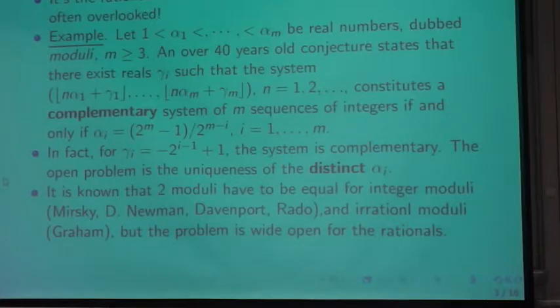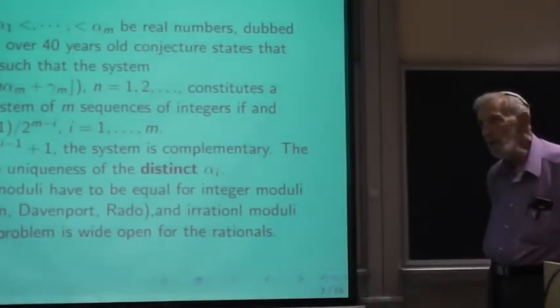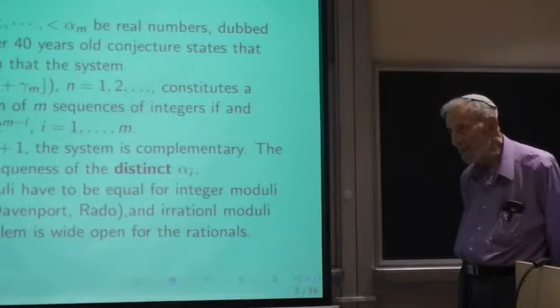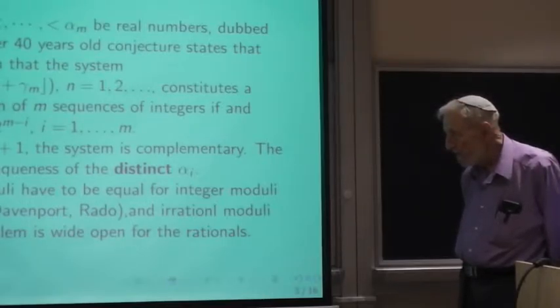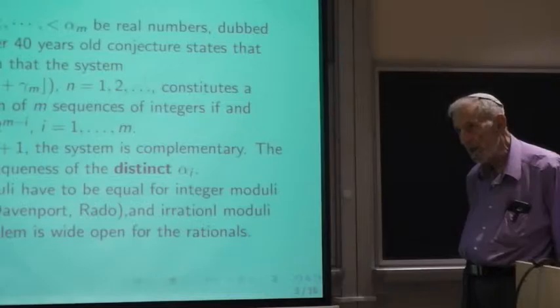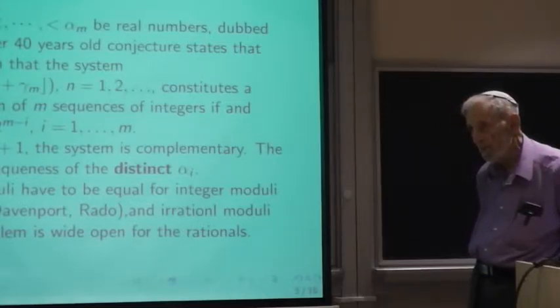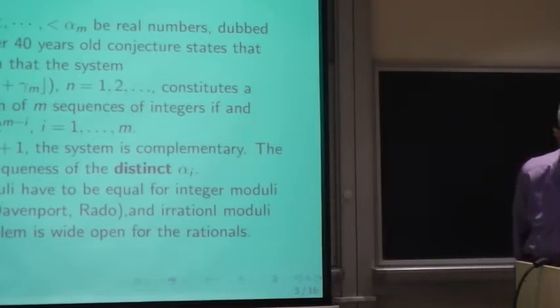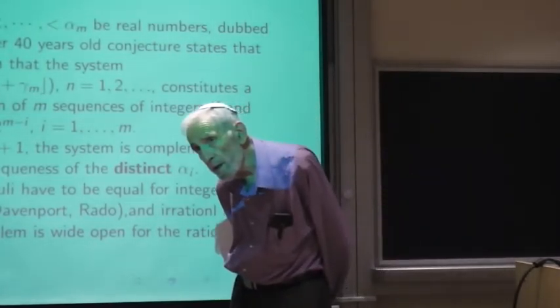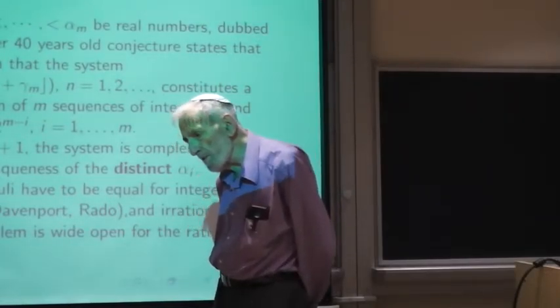But the proof from the book uses, everybody knows what the proof from the book is, right? And it uses generating functions and complex numbers. And it's very simple, but it doesn't really give you much of an insight why they have to be the same, the two largest moduli. And we found later on an elementary proof, but it's much more complicated. And independently, my friend Jeremy Simpson from Australia also finds an elementary proof at about the same time.